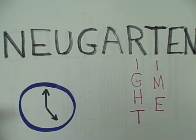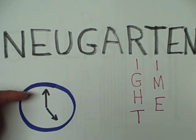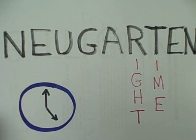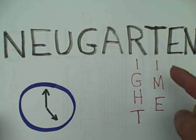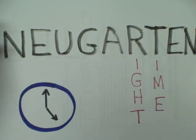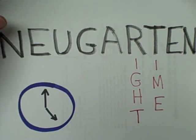Then we have Neugarten, who is very interested in the clock of the life span. The important thing for Neugarten is that when things don't occur at the right time, they become more stressful and more difficult to cope with.